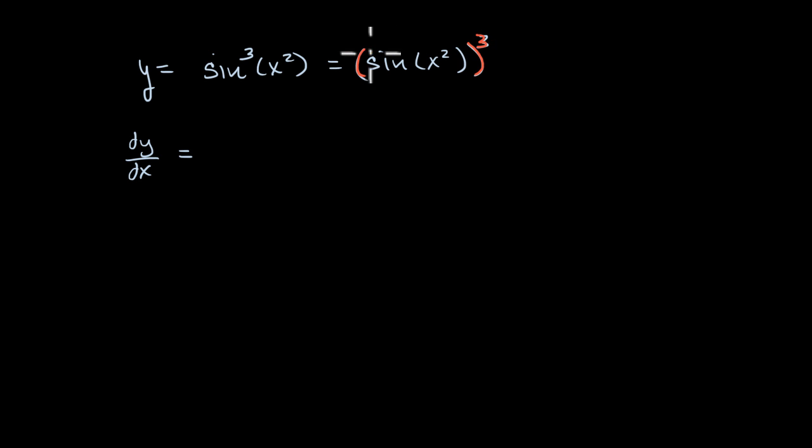So if we apply the chain rule, it's gonna be the derivative of the outside with respect to the inside. Or the something to the third power, the derivative of the something to the third power with respect to that something.